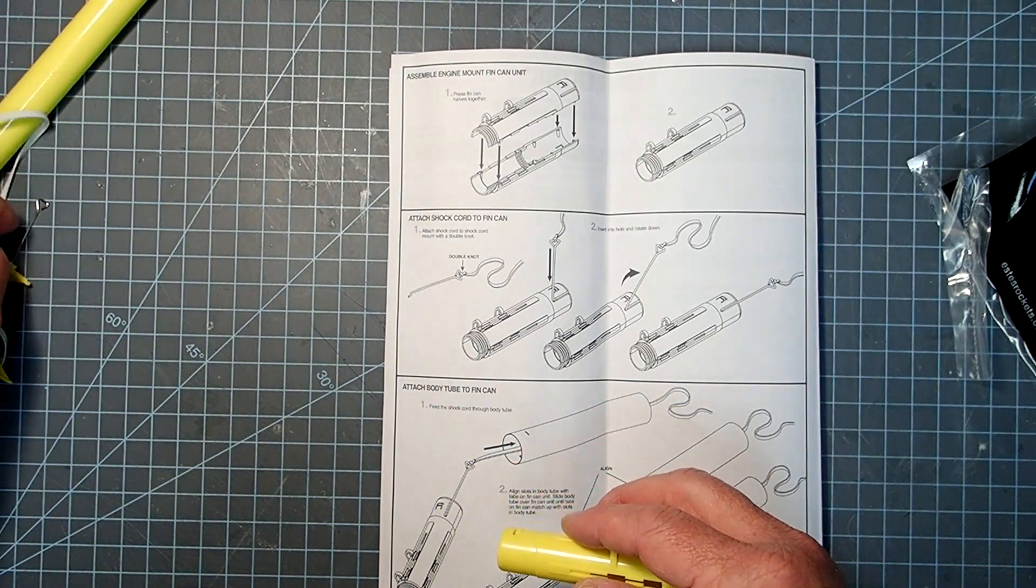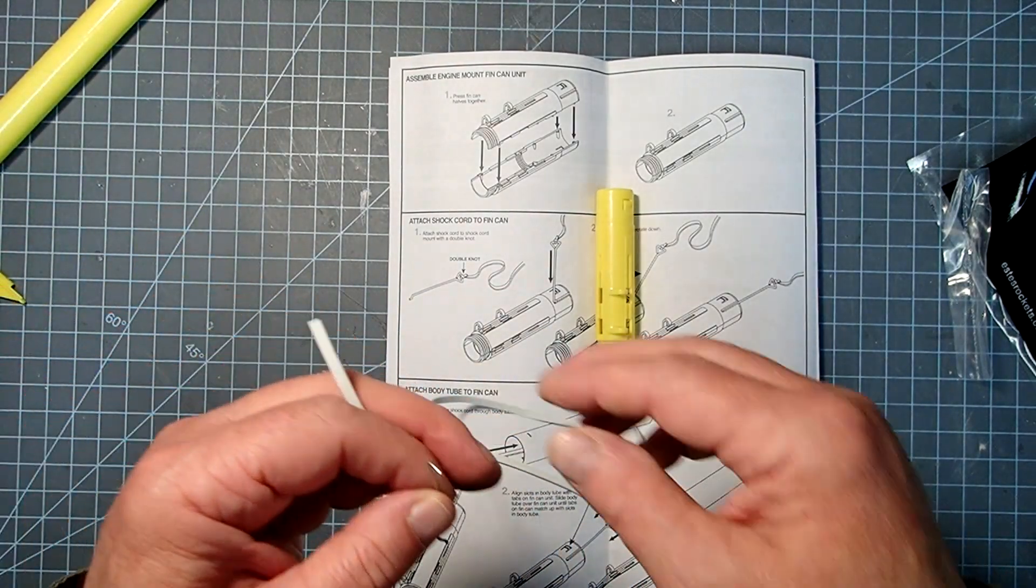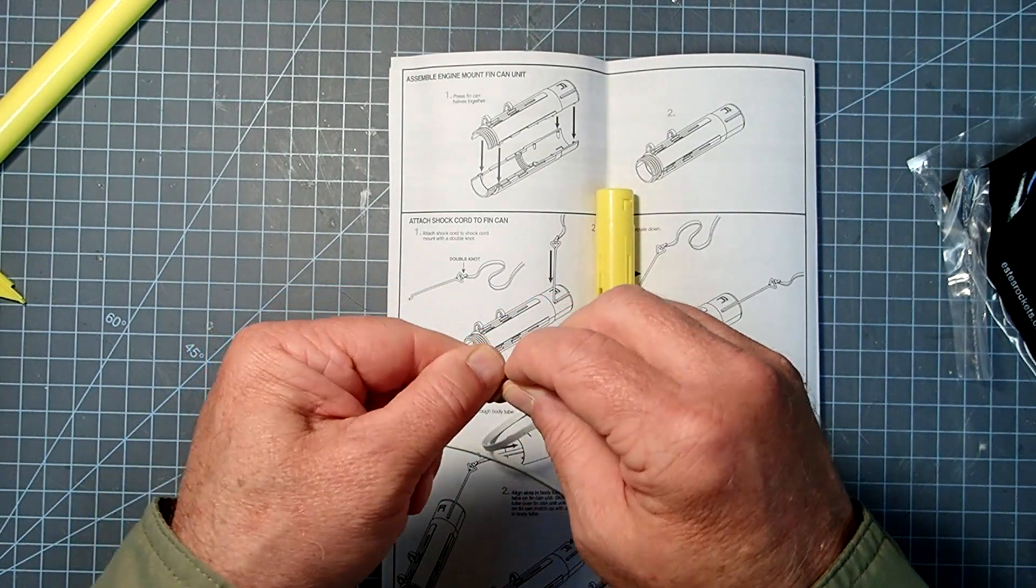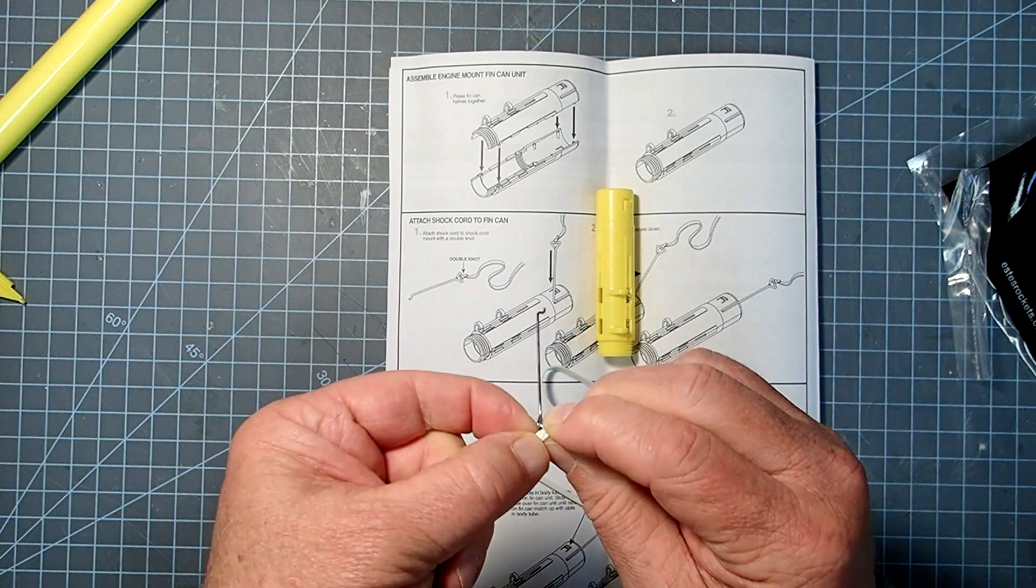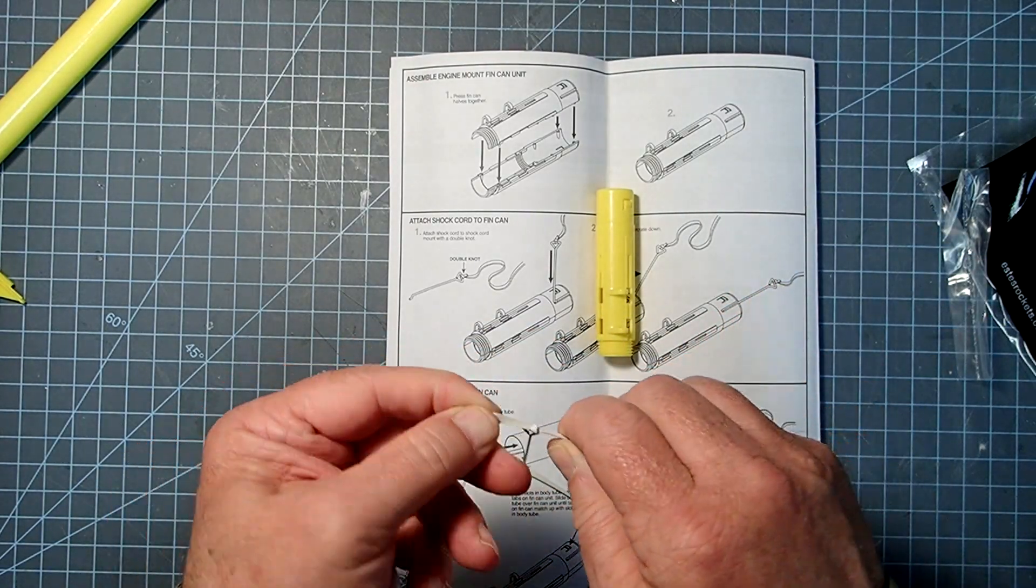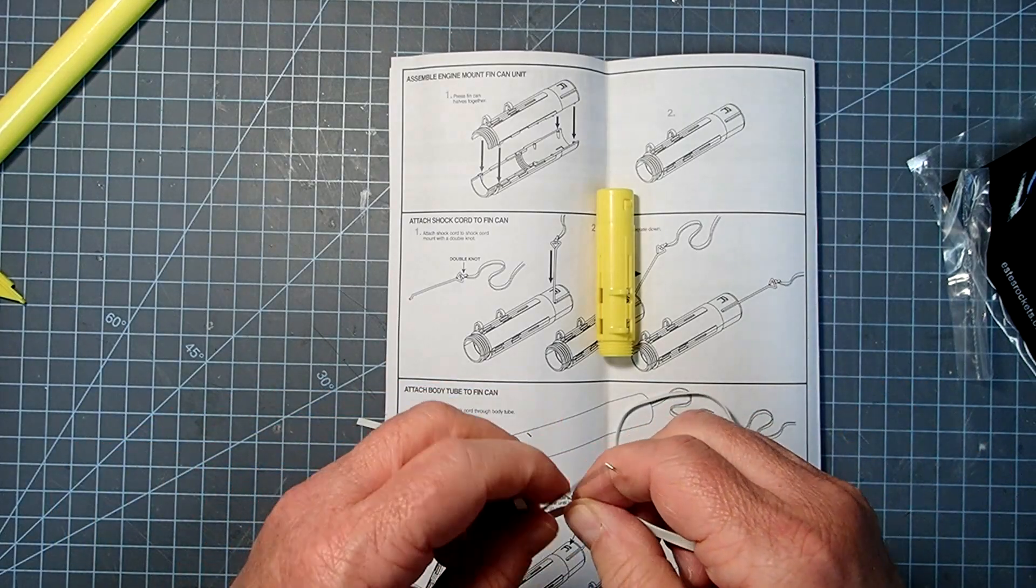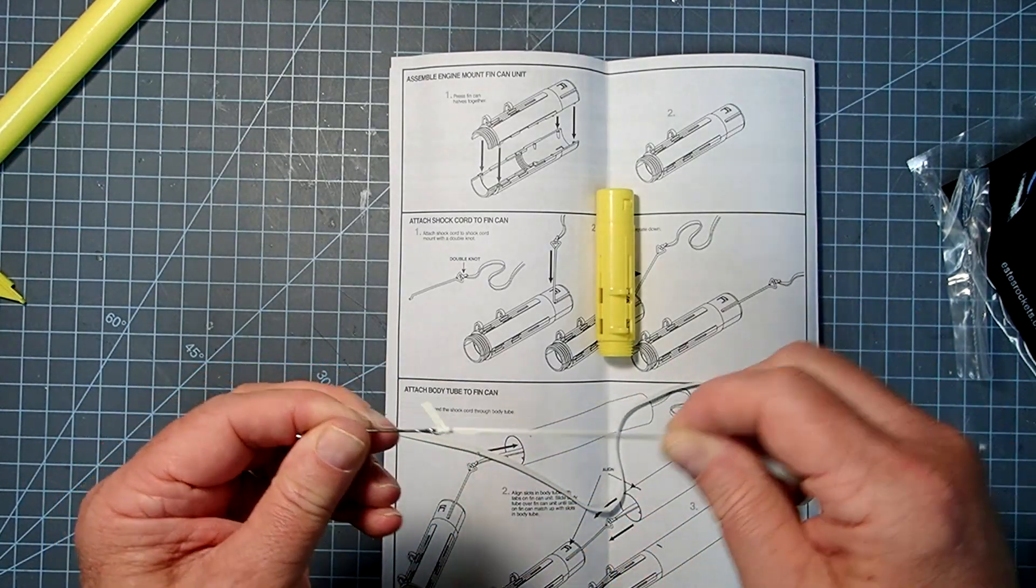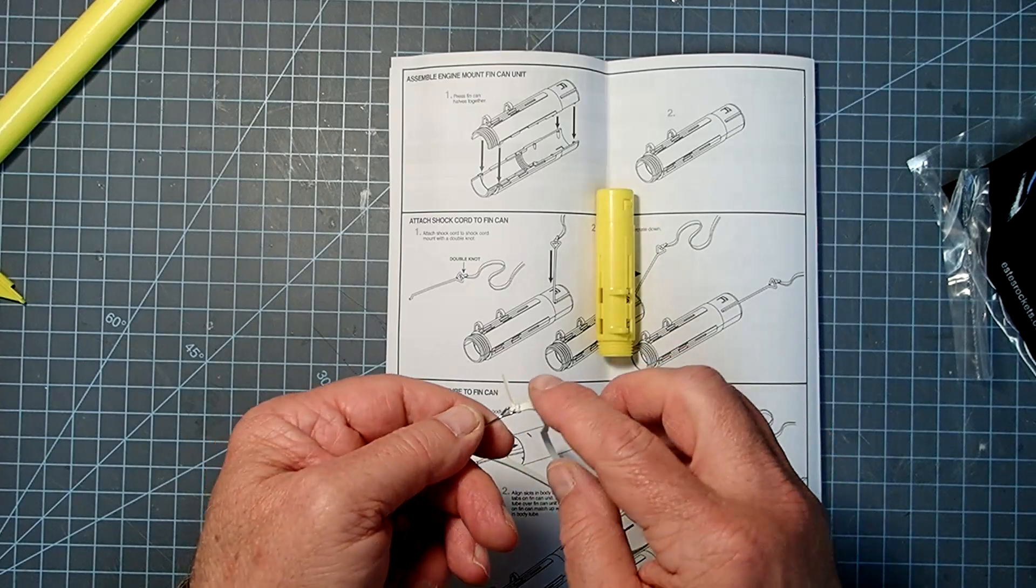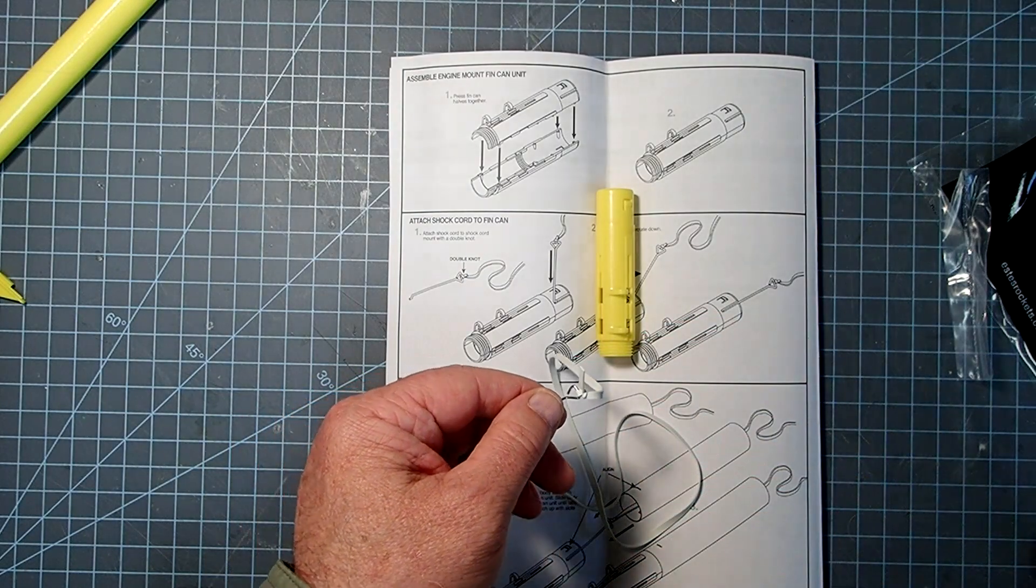And then we're going to take this little anchor, and we're going to tie a knot in our shock cord around this. So just put the one end of the shock cord around there, tie a double knot or two half hitches. Make sure that they don't slip apart. Pull it from various directions here. You don't want too much hanging out. This is okay. If it's more than this, I would cut it back a little bit. But don't cut it back all the way to the knot.